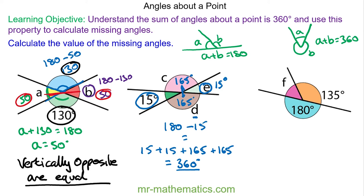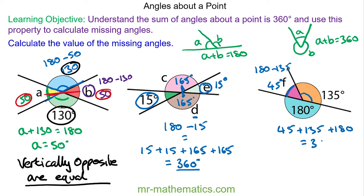Angle f lies along the same straight line as the orange angle, so this will be 180 take away 135 degrees, which is 45 degrees. We can check that this is right because they should all add up to 360, so 45 plus 135 plus 180, and that does add up to 360.